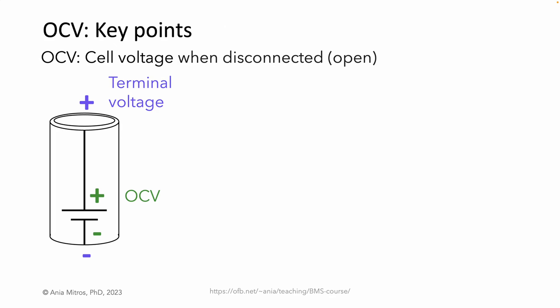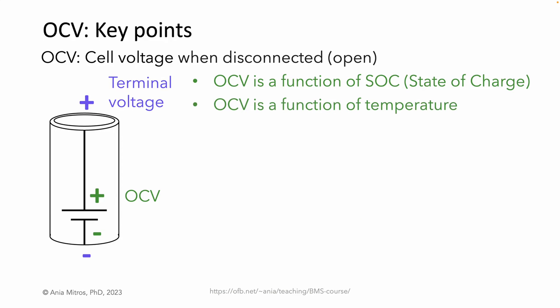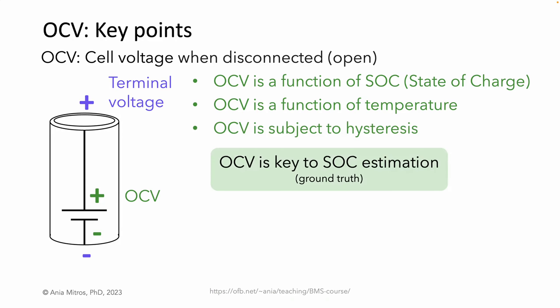To summarize the key points: OCV is a function of state of charge, OCV is a function of temperature, OCV is subject to hysteresis, and OCV is key to state of charge estimation. As a side note, SOC and temperature dependencies are much larger than hysteresis. You can manage a battery safely without accounting for hysteresis, though your range predictions may be affected, especially mid-range where hysteresis is largest.